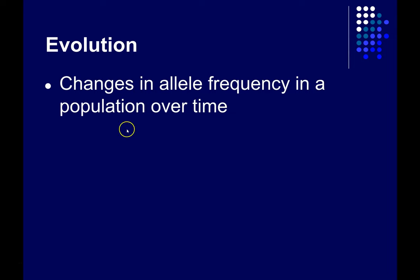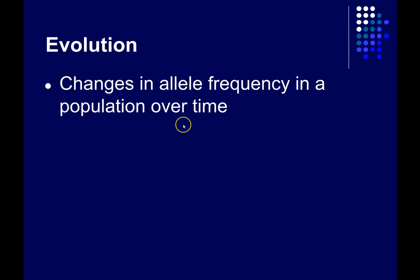Let's start with the definition of evolution. This is as good as any: it's changes in allele frequency in a population over time. There are potentially other definitions, but this is a nice broad definition that will make it easy to work with. Remember that an allele is one version of a gene. When the frequency of those versions changes over the course of time in a population — multiple generations — then evolution has occurred.